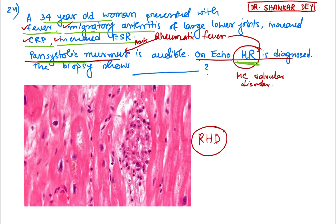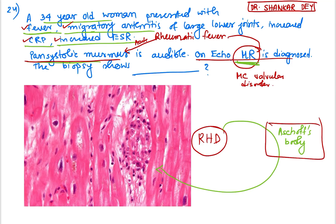On biopsy, rheumatic heart disease shows Aschoff bodies. Aschoff bodies show presence of lymphocytes, plasma cells, and caterpillar cells — cells with a wavy nucleus. So Aschoff body is the answer: it is seen in heart muscle in cases of rheumatic heart disease.